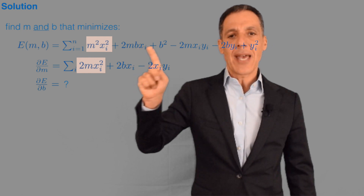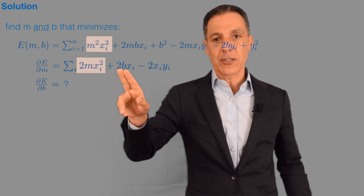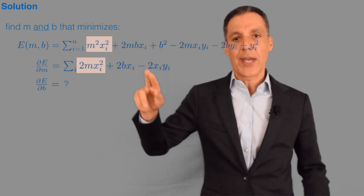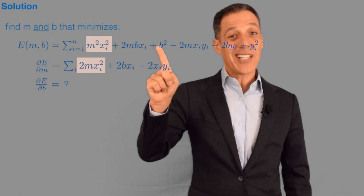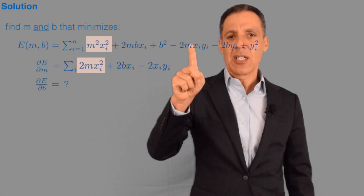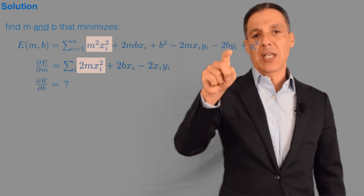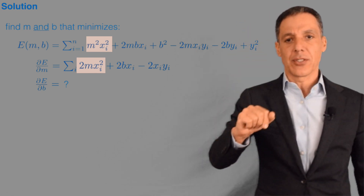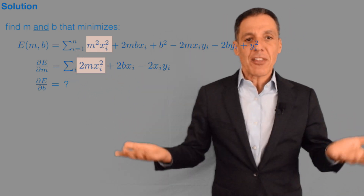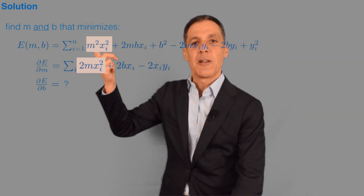The derivative of 2m·b·x_i: here 2b·x_i is constant, and the derivative of m is 1, so we get 2b·x_i. The derivative of b² with respect to m is 0 — it's a constant. The derivative of the -2m·x_i·y_i term: we have 2x_i·y_i as a constant and derivative of m is 1, so this gives -2x_i·y_i. Any remaining terms with no m are constants and go to zero. So that's the partial derivative of the quadratic error function with respect to m — just bring the power down and reduce it by 1.